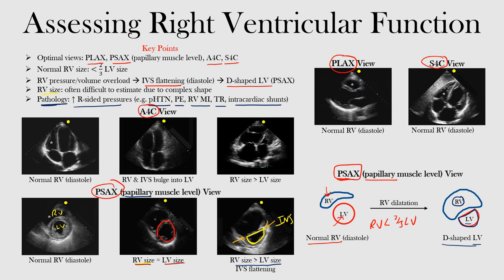Next we have the apical four chamber view. Notice the star highlighting the right ventricle. This is your left ventricle, this would be your left atrium, and this would be your right atrium — you can see the valves between them as well. Between the right atrium and right ventricle is the tricuspid valve, and then this would be the mitral valve. Our focus here is the right ventricle — that's normal diastole of the right ventricle.